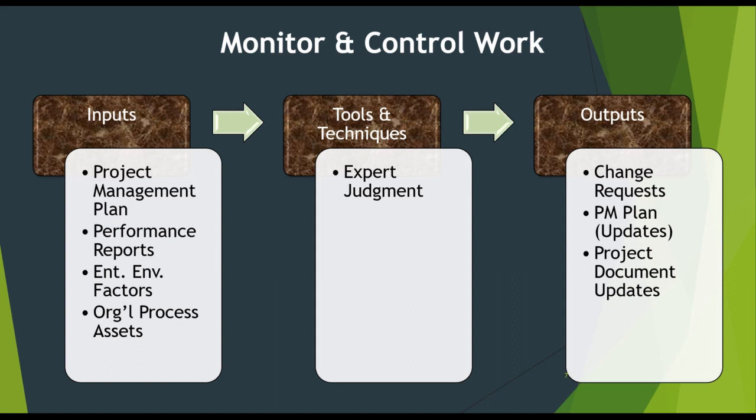Monitoring and control is the responsibility of the project manager to make necessary adjustments related to resource allocation and ensure that everything is going on track. To help this, a project manager may conduct review meetings and get regular performance reports. The inputs for monitoring and control work are: project management plan, performance reports, enterprise environmental factors, organizational process assets. Tools and techniques are expert judgment, and outputs are change requests, PM plan updates, and project document updates.